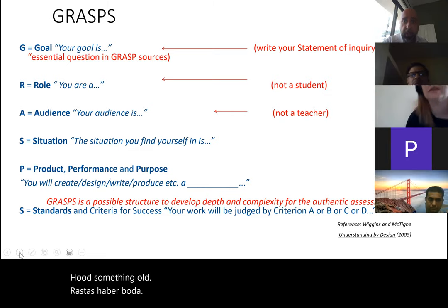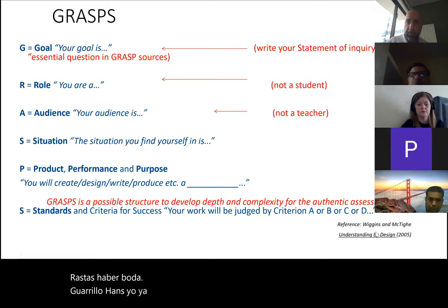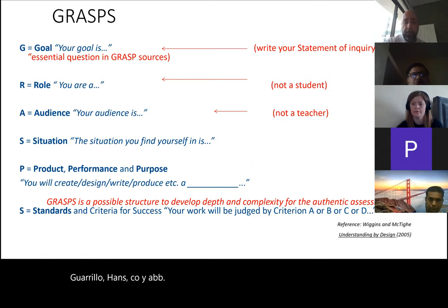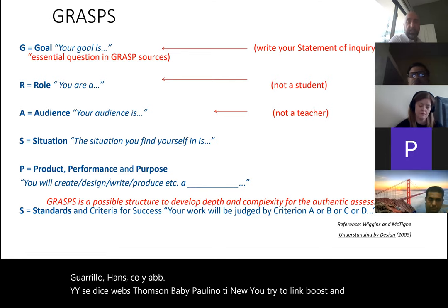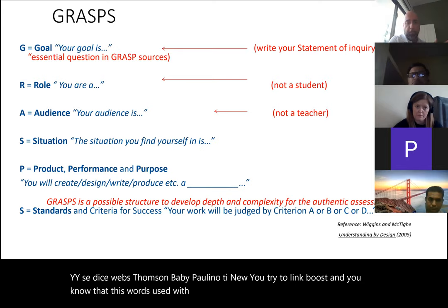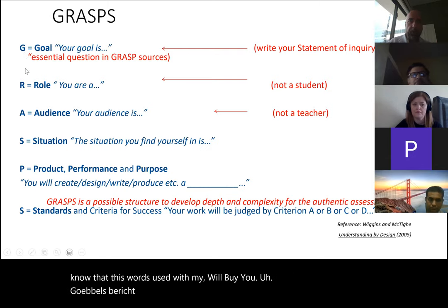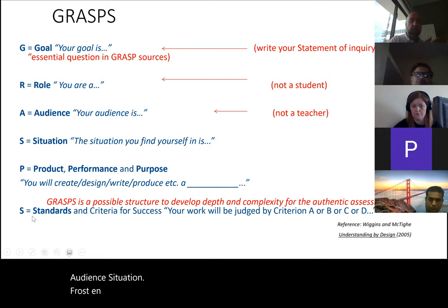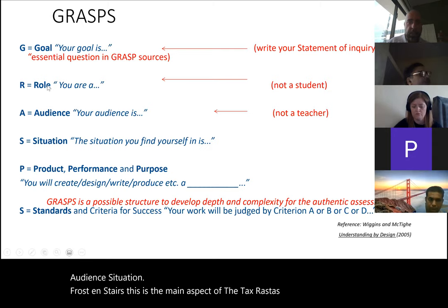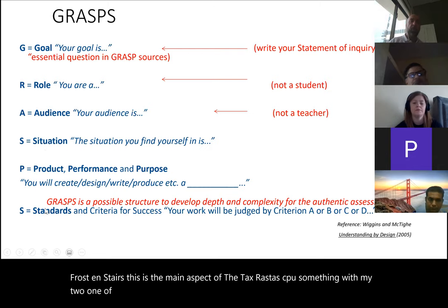Has anyone heard of something called GRASP tasks? Priyadarshini has heard and used them in class — excellent. This GRASP approach was proposed by Wiggins and McTighe in 'Understanding by Design,' published in 2005 — a book I really advise you to look at. A GRASP task stands for: Goal, Role, Audience, Situation, Product, and Standards. This is the main framework: students reflect and produce something that meets and answers each one of these six aspects.